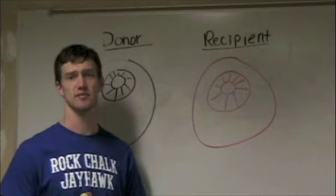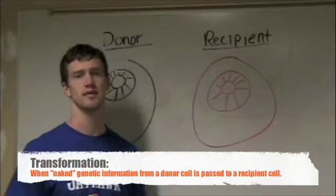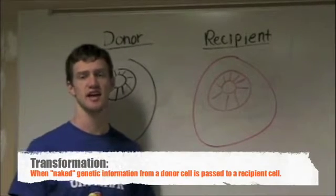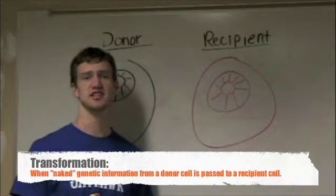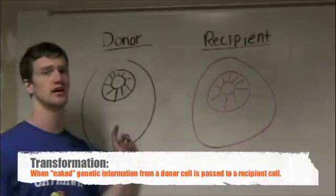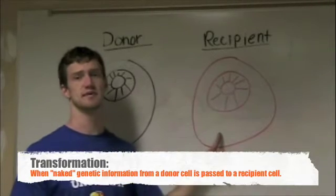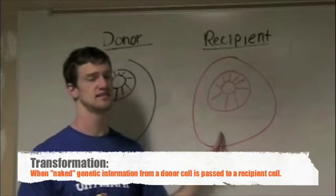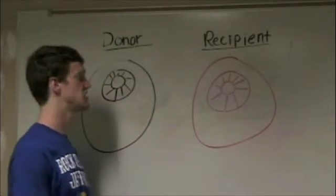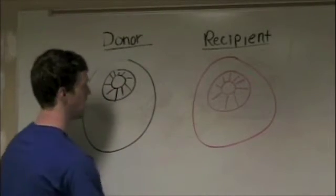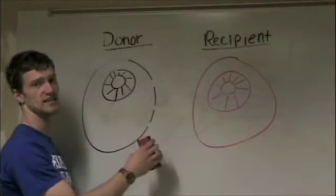Now we're going to talk about the process of transformation in a bacterial cell. Transformation is when naked genetic information is taken from one donor cell and it's passed on to a recipient cell. This is a really neat thing that happens — it occurs in nature when the cell wall of the donor is lysed.